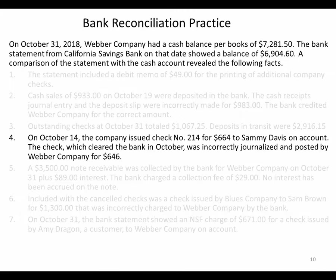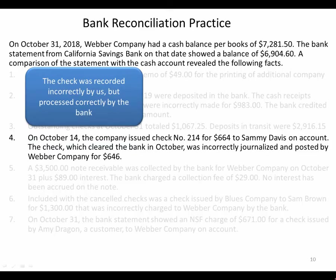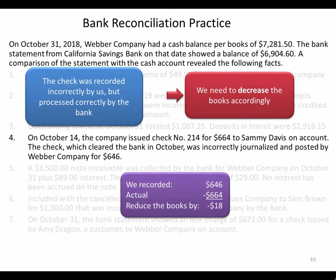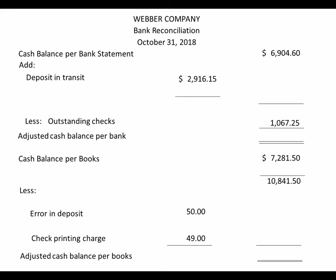Number four: on October 14 the company issued check number 214 for $664 to Sammy Davis on account. The check, which cleared the bank in October, was incorrectly journalized and posted by Weber Company for $646. We made another mistake in our books — the check was recorded incorrectly by us, but processed correctly by the bank. We need to decrease our books for this error because we recorded $646 but the actual amount was $664, so we deduct that additional $18 from our cash balance per books.